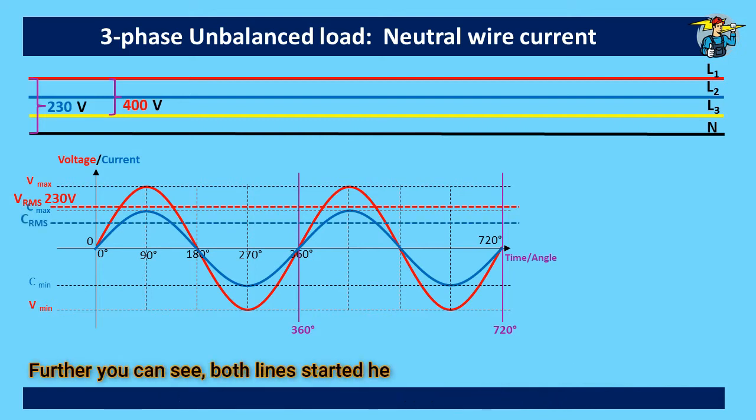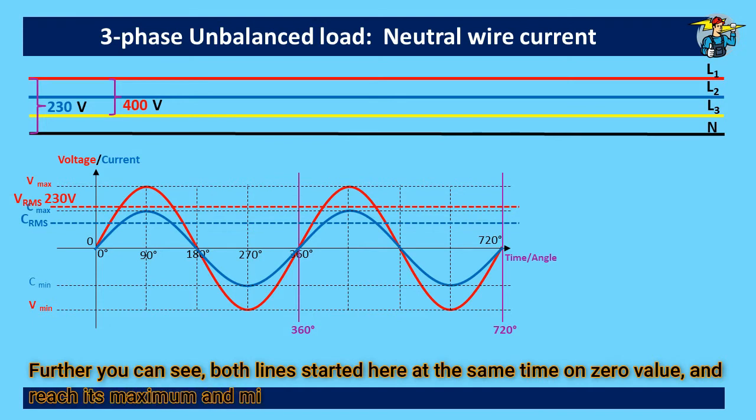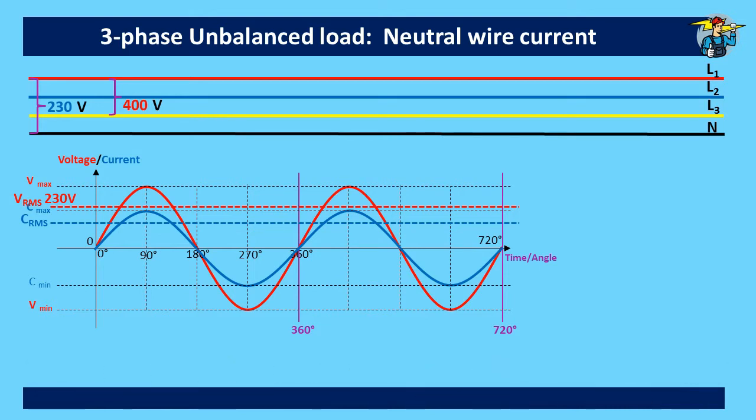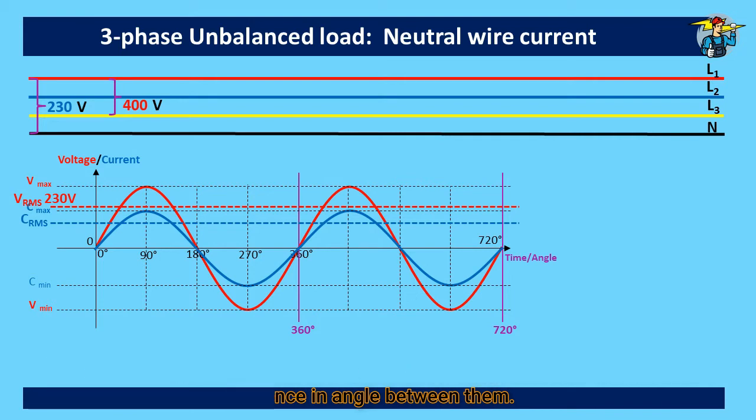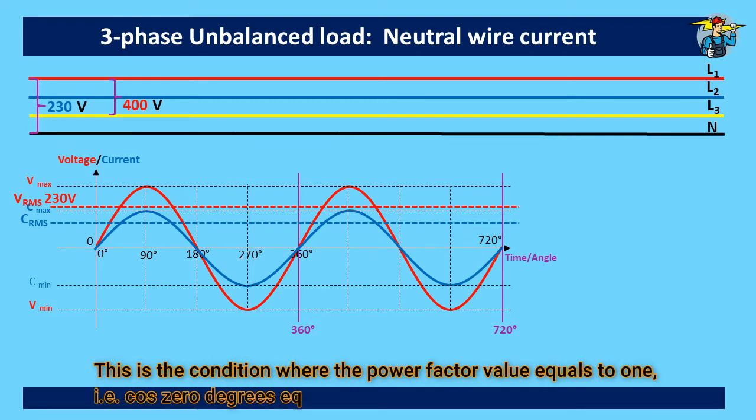Further you can see, both lines started here at the same time on zero value, and reach its maximum and minimum values also on same time at same angle. This happens when three phase load is with pure resistive loads only. Since no inductive or capacitive load involved, voltage and current sine waves are in phase, and no difference in angle between them. This is the condition where the power factor value equals to 1, that is cos 0 degrees equals 1.